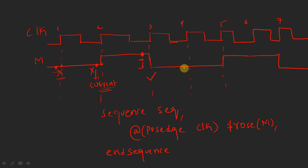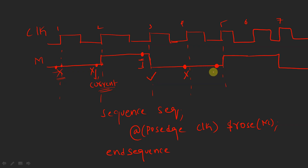At the fourth clock edge, the current evaluation point value is zero and the previous evaluation point value was one, so there is a transition from one to zero — the assertion fails. At the fifth clock edge, the value is zero at the current evaluation point and also zero at the previous evaluation point, so there is no transition and the assertion fails.